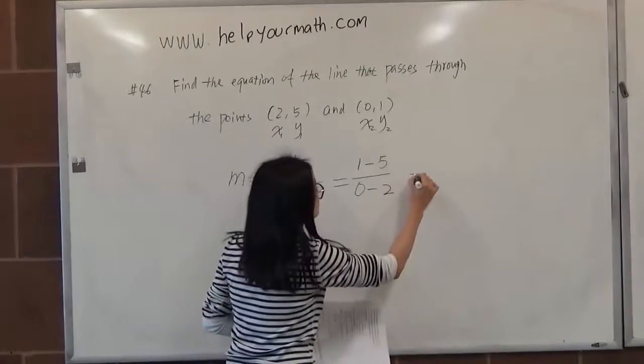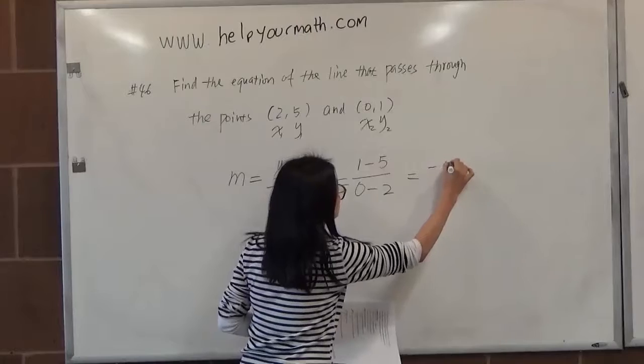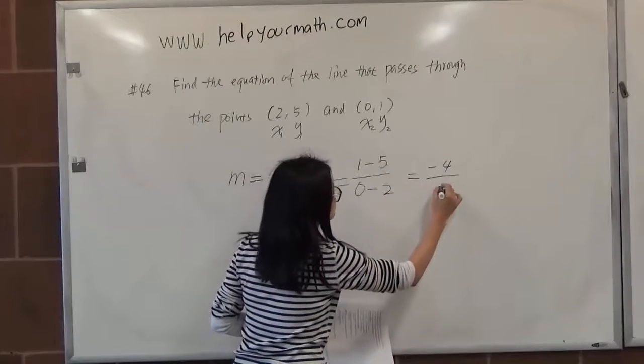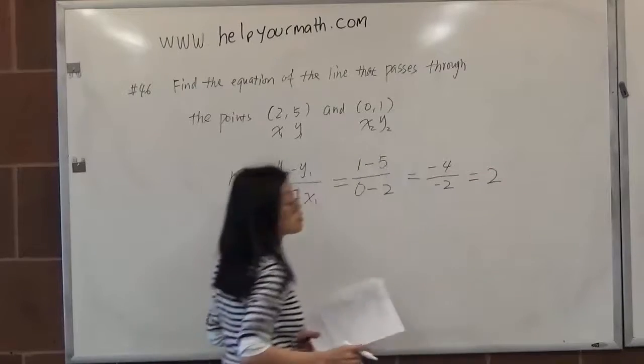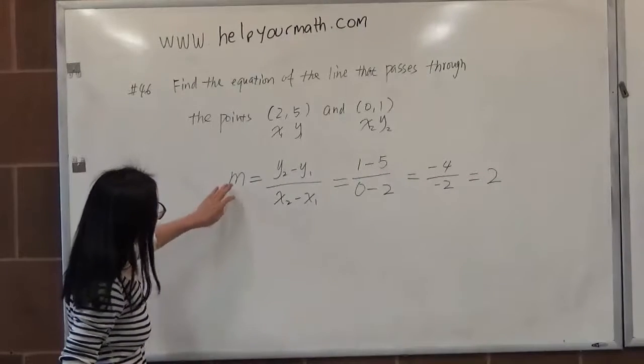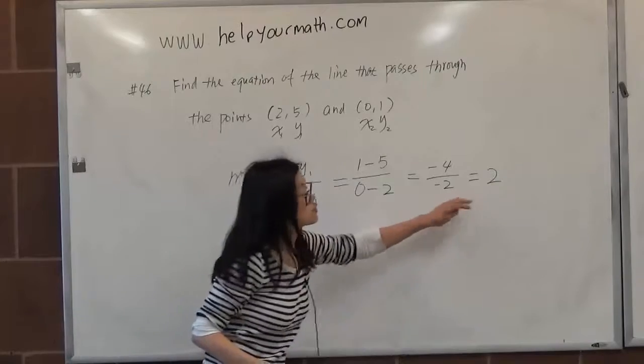In this case, 1 minus 5 equals negative 4. 0 minus 2 is negative 2. And the division will give us positive 2 here. So our slope equals 2 for this equation.